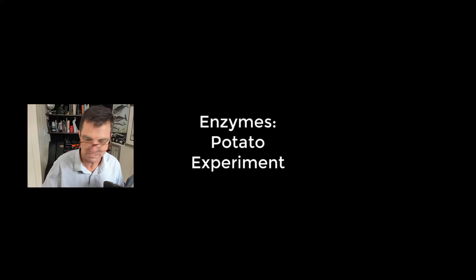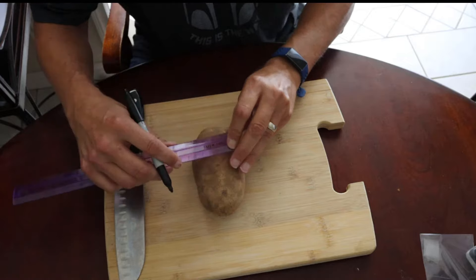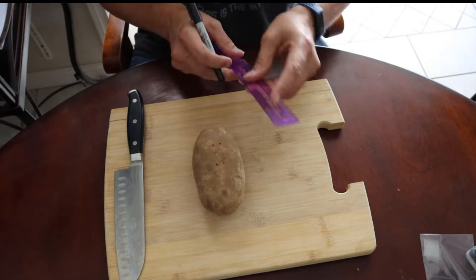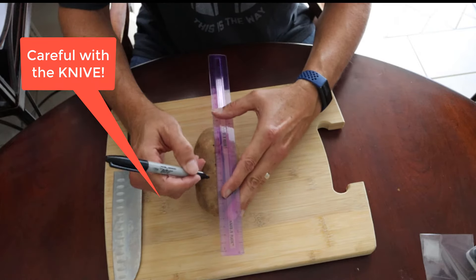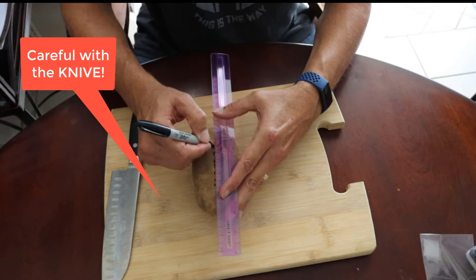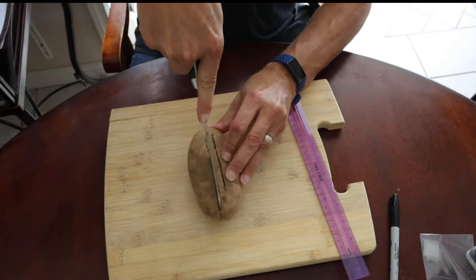This is the potato experiment with the enzyme catalase. The first thing we did was prepare our potato. We made some marks on our potato and cut a one-centimeter wedge in the middle of our potato.